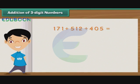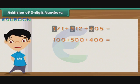To simplify the addition, we proceed according to place values. Let us begin with the digits at the hundreds place, that is 1, 5, and 4. We add 100, 500, and 400. The sum is 1000.